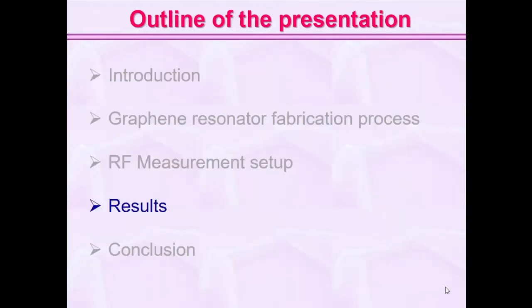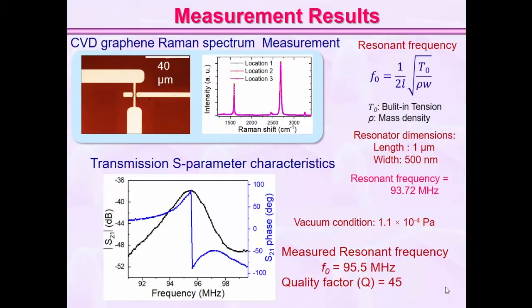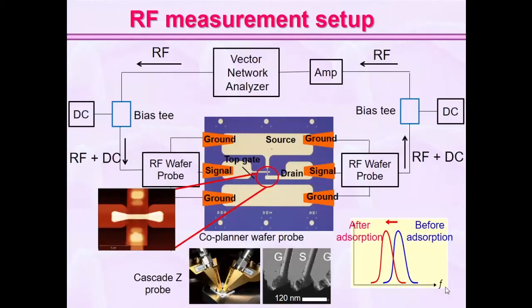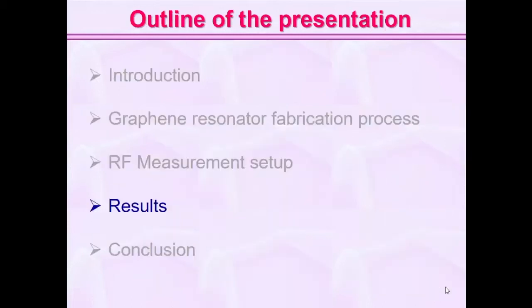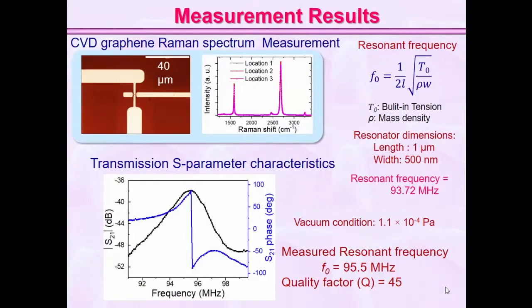This is the optical microscope image of the CVD graphene with the resonators. We characterized it using Raman measurements, confirming it is almost monolayer. For this resonator, the length was 1 micrometer and width was 100 nanometers. We calculated the resonant frequency to be around 93 MHz. Comparing with our measurement results, where we measured the transmission characteristics by sending an RF signal to the gate and measuring the response at the drain terminal, we measured the resonant frequency to be around 95 MHz with a quality factor of 45, at a vacuum condition of 1.1 × 10⁻⁴ Pascals.